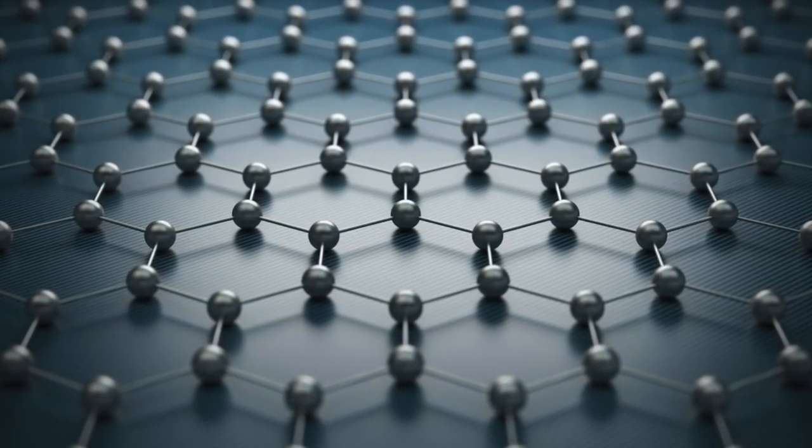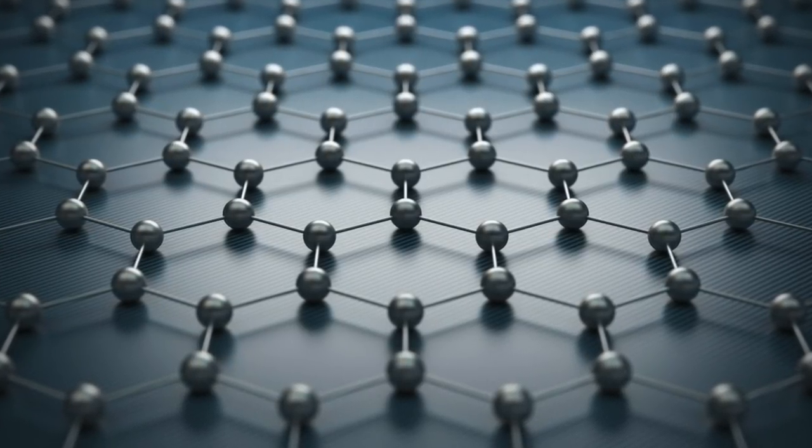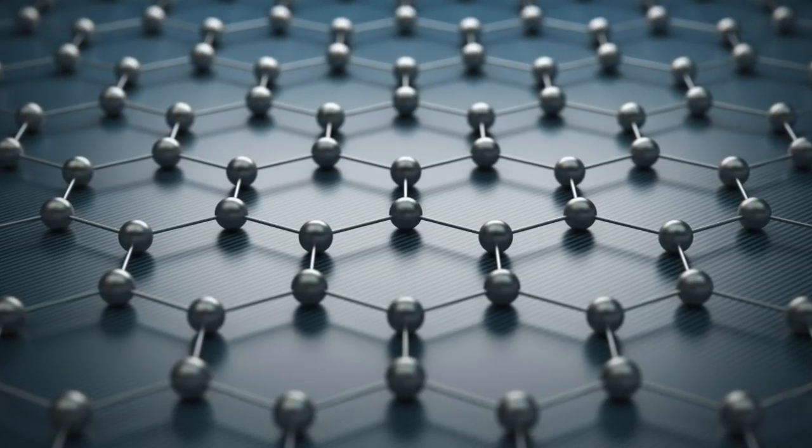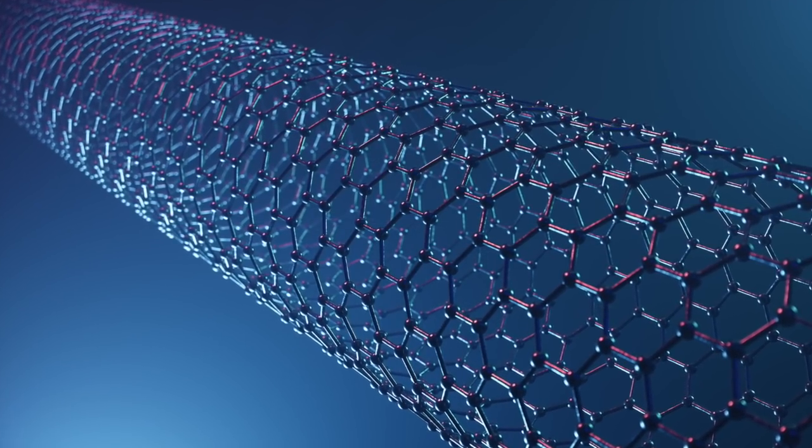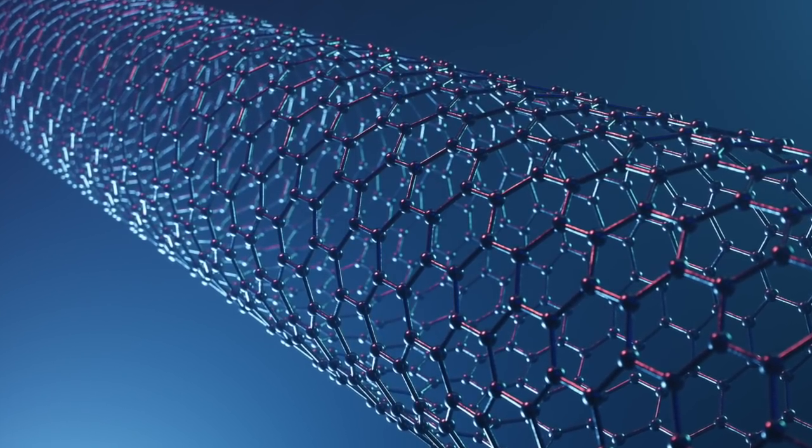In 2016, scientists in Vienna managed to create the first stable form of carbyne, originally theorized in 1855 by Adolf von Baeyer. Carbyne, or linear acetylenic carbon, is essentially an infinitely long carbon chain and is also a one-dimensional allotrope of carbon.